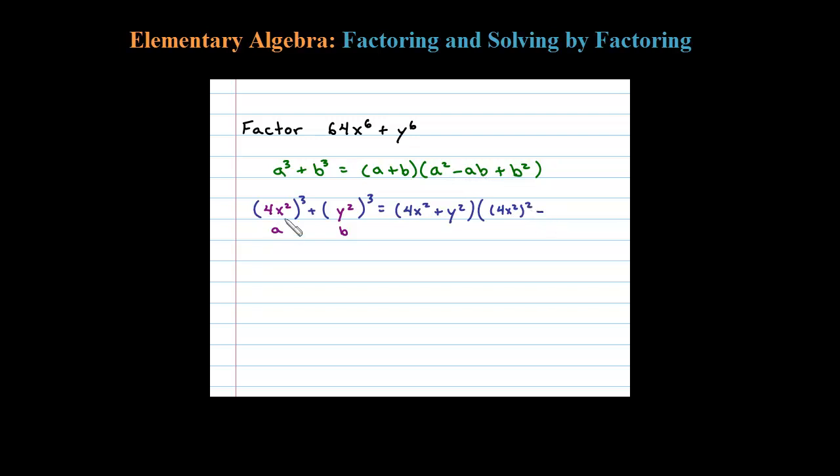Minus a times b, so 4x squared times y squared, and then plus b squared: y squared squared.